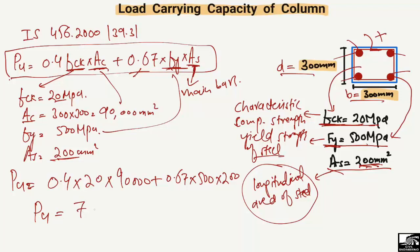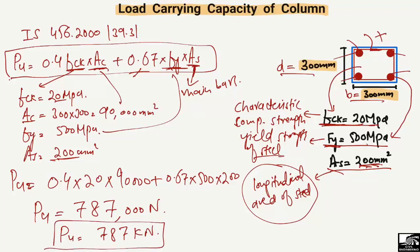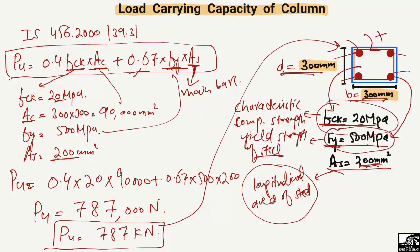The load carrying capacity for this column equals 787,000 Newton, or 787 kilonewton. This is for a 300 × 300 mm column with concrete strength of 20 MPa, steel yield strength of 500 MPa, and longitudinal steel area of 200 square millimeters. If we change any of these parameters, we will get a different load carrying capacity.